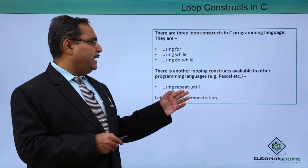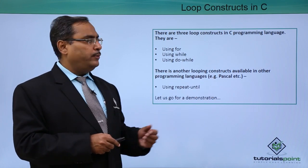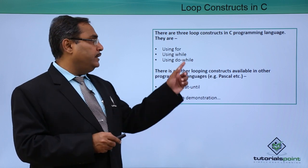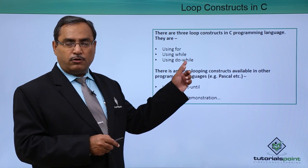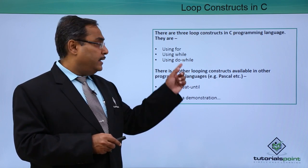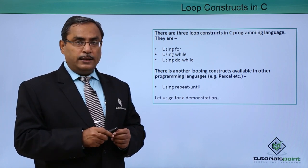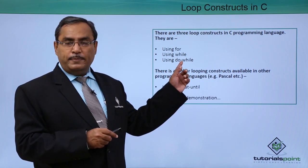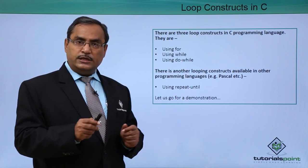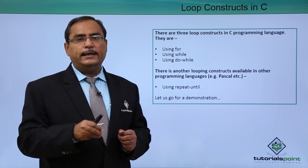In other programming languages like Pascal, there is another looping construct called repeat-until. The basic difference between for, while, do-while and repeat-until is that for/while/do-while loop when the condition is true and exit when it becomes false, whereas repeat-until loops when the condition is false and terminates when it becomes true.